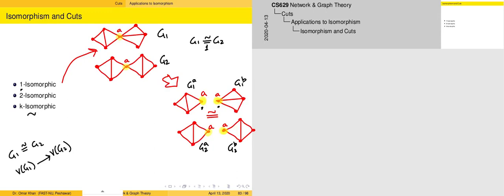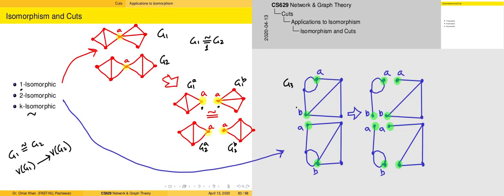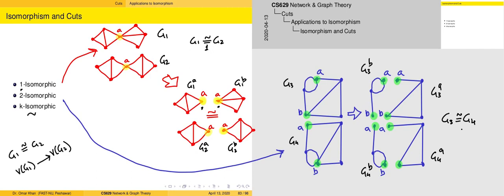For 2-isomorphism, consider graphs G3 and G4, which are not isomorphic because the largest degree differs between them. The vertex connectivity of G3 and G4 is not 1 but 2. If we identify those cut vertices and perform a split operation, we get G3a, G3b and G4a, G4b. In this case, both graphs have 2-isomorphism with one another. This is a small topic covered briefly — we can finish here and continue in the next class.